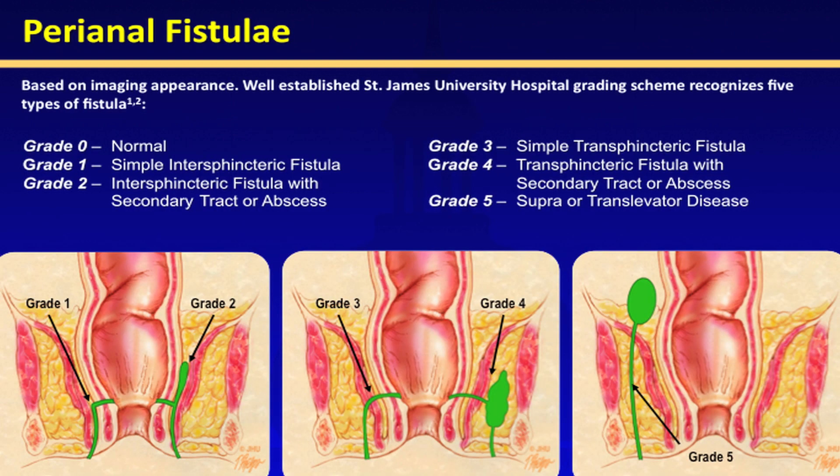The MRI classification established by the St. James University Hospital grades the fistulas into grade 1, which is a simple intersphincteric fistula; grade 2, an intersphincteric fistula with secondary tract or abscess; grade 3, a simple transphincteric fistula; grade 4, transphincteric fistula with secondary tract or abscess; and grade 5 with supra or translevator disease.